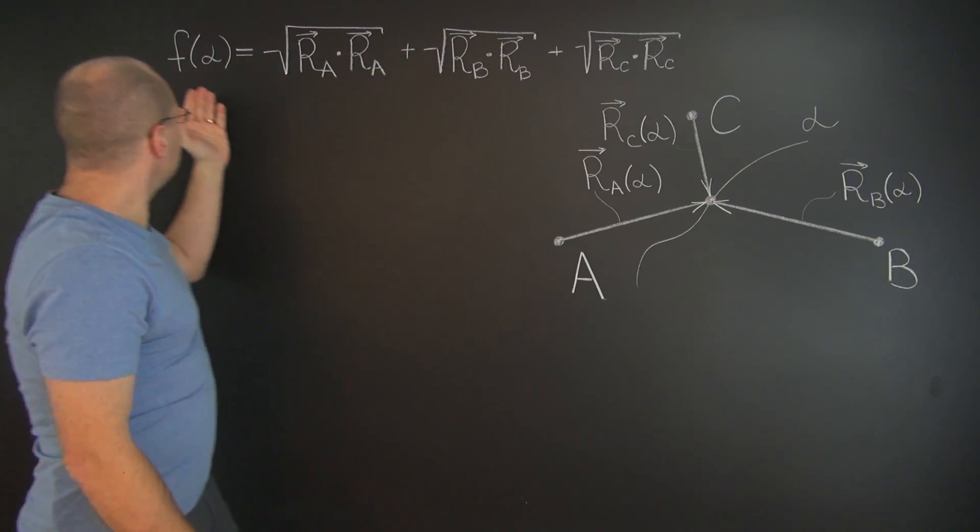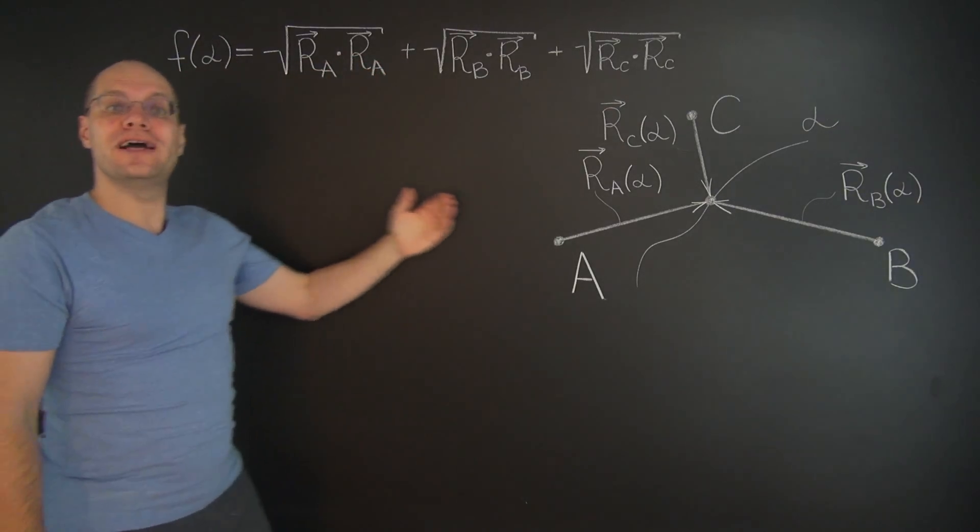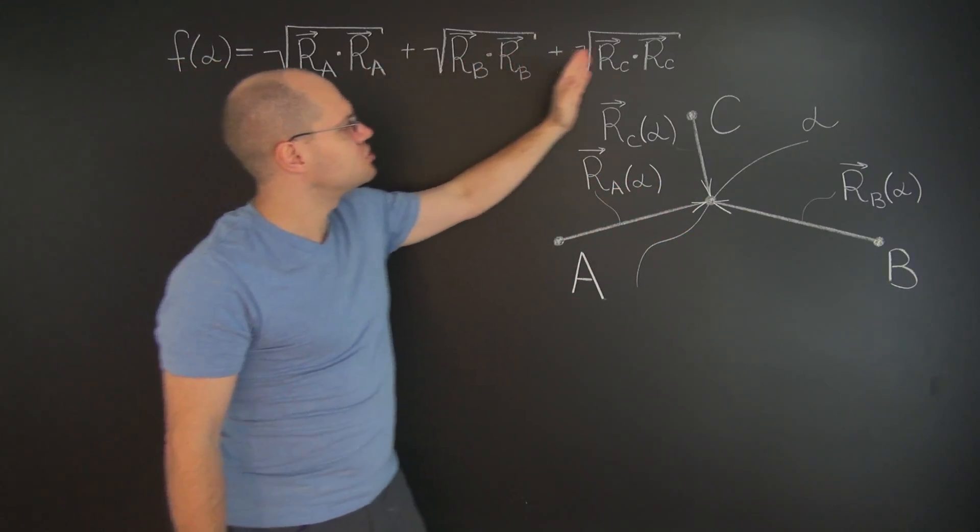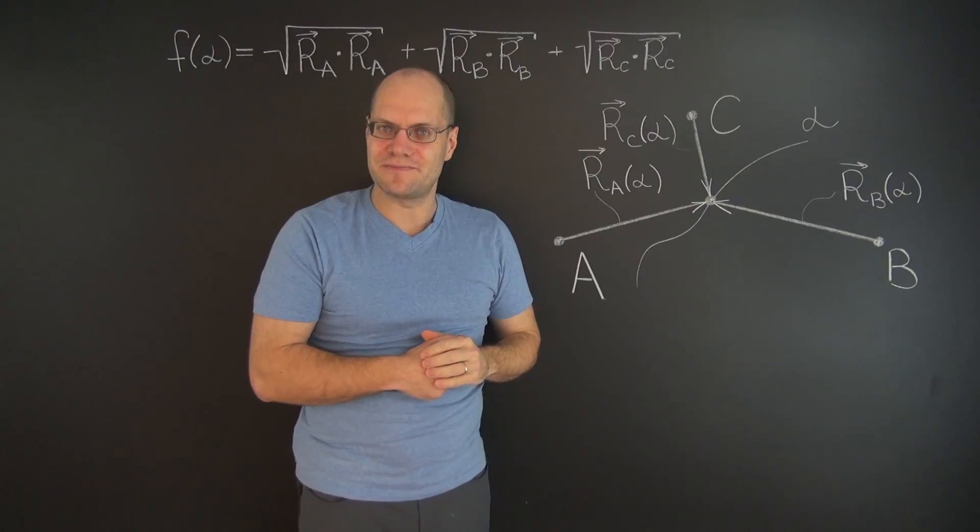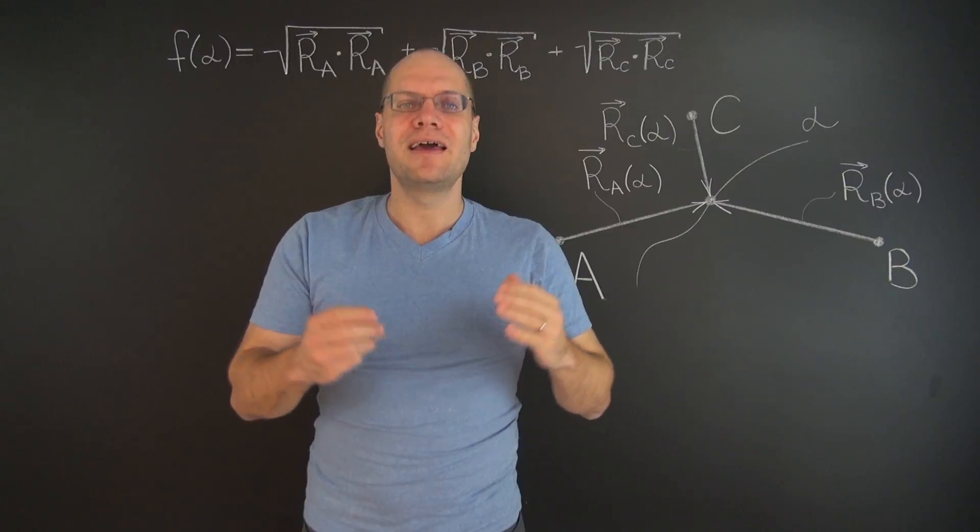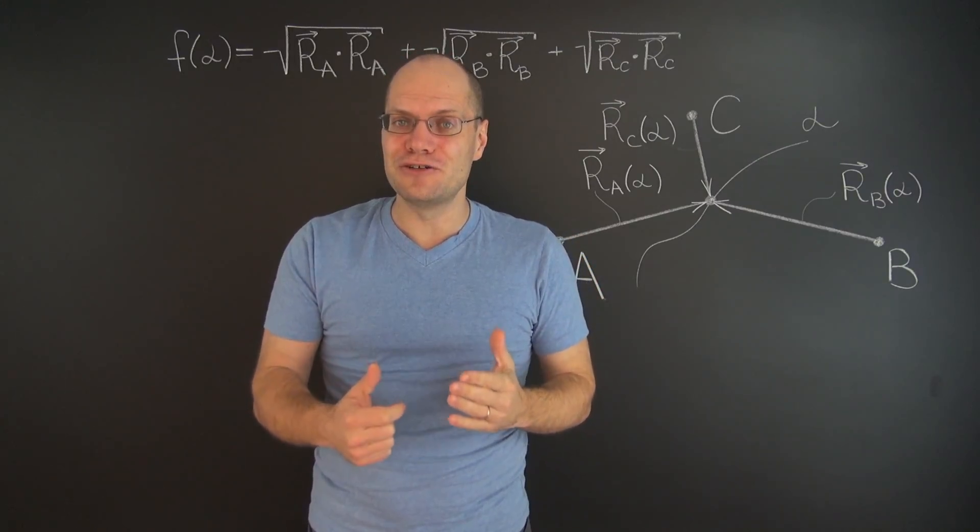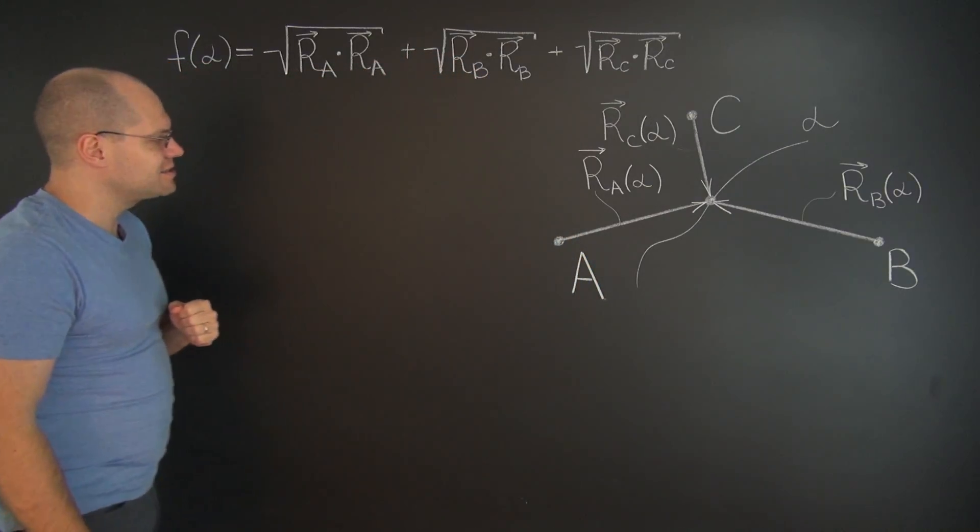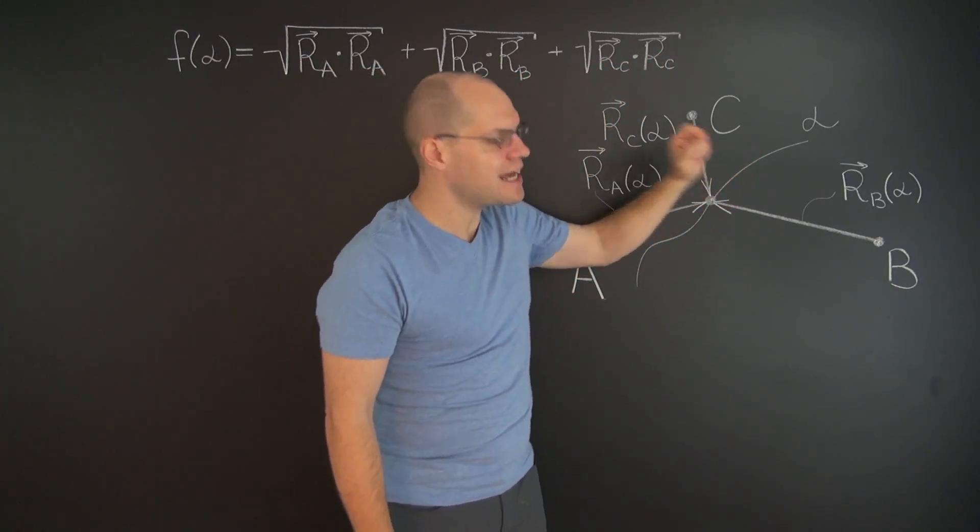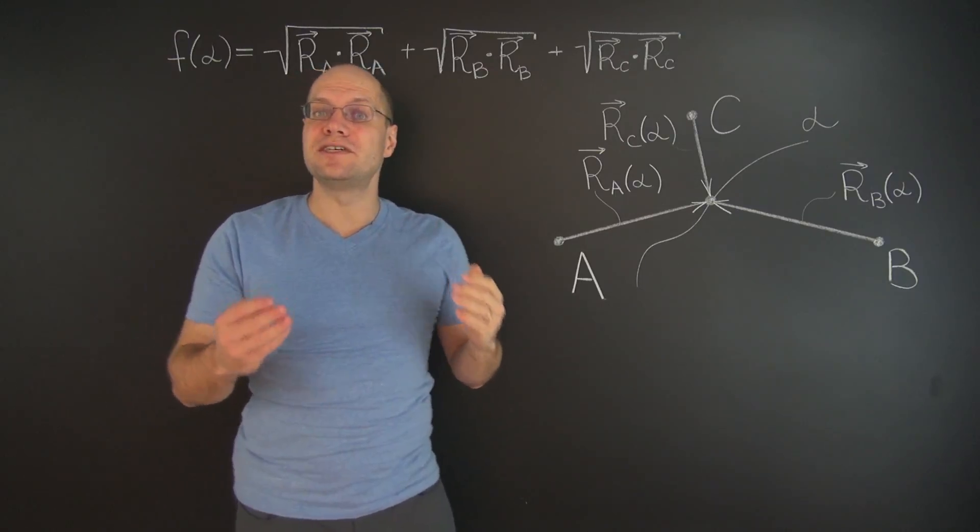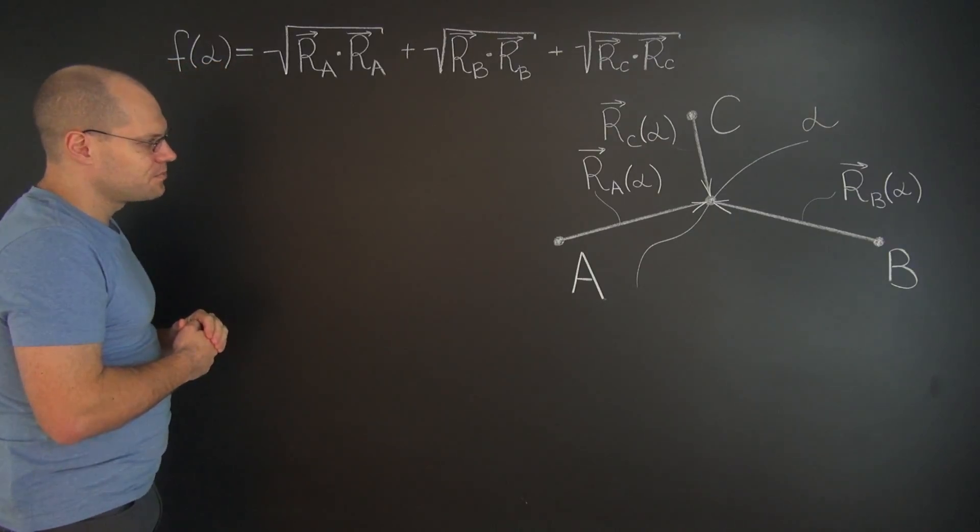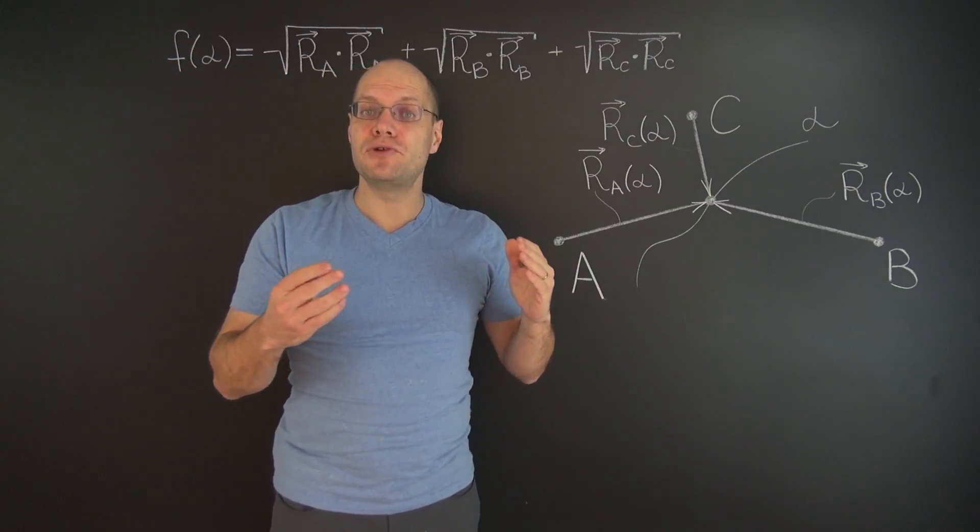So we will now differentiate this function and equate the derivative to zero. Because the point that we're looking for corresponds to the smallest value of this function. Now we've already done this task before, so I won't repeat the details. Instead I'll just summarize the conclusion. And what we'll find is that each one of these terms will be proportional to the common tangent to this curve. Which we'll denote by little t of alpha. And in parentheses we'll have the sum of the three unit vectors.